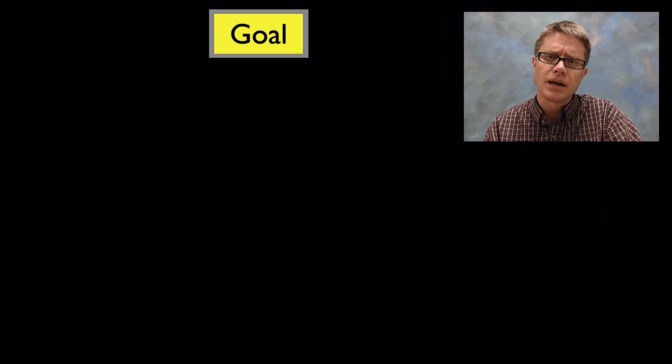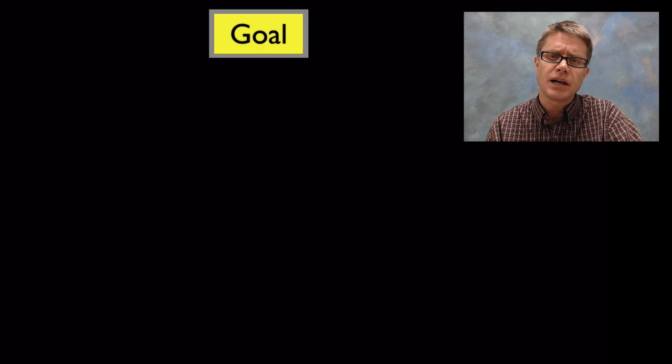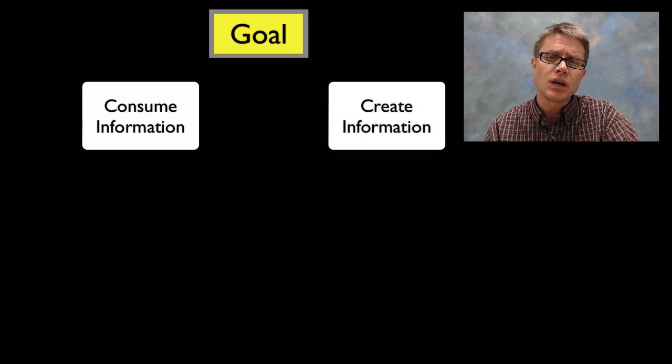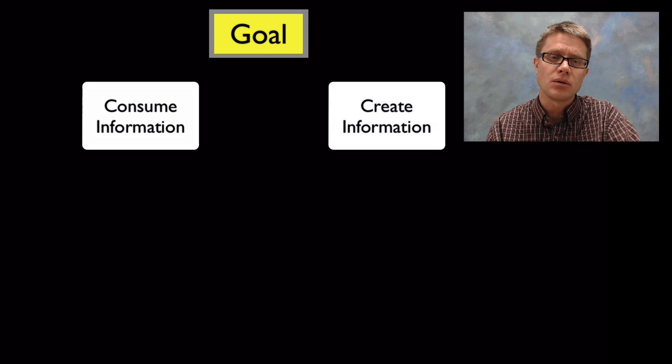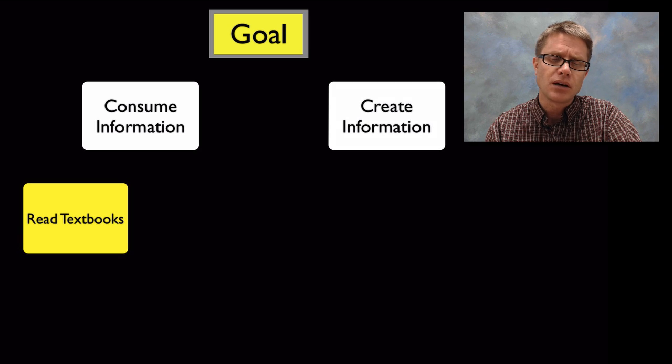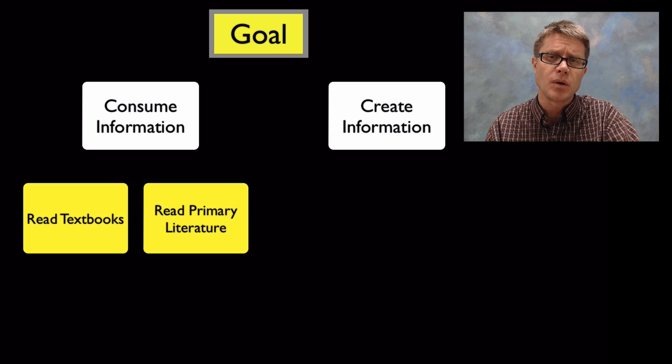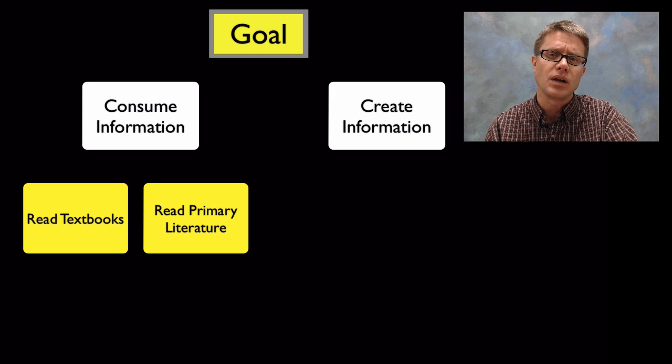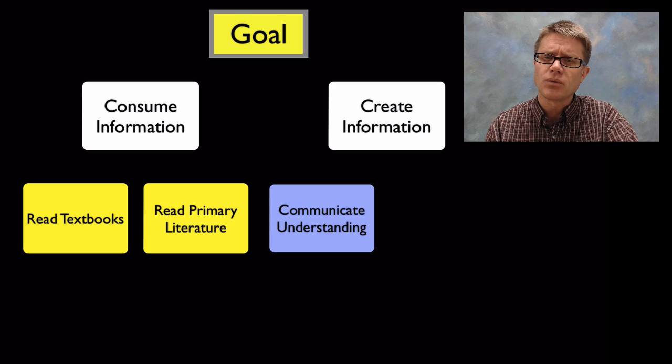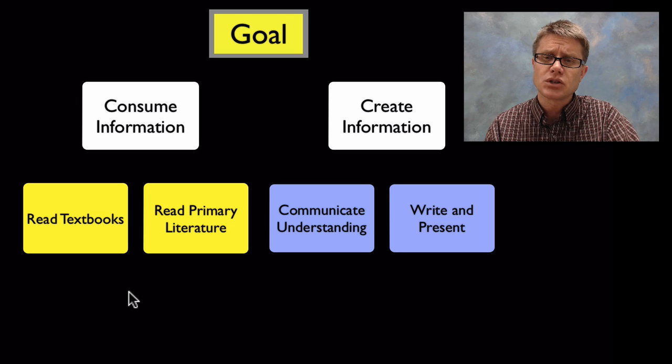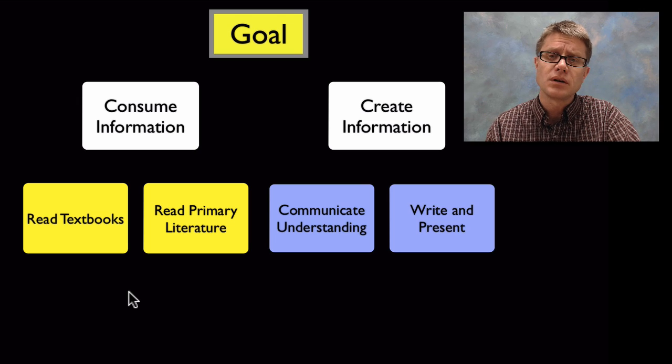So what's the goal then as a science teacher? What should be the goal in a science classroom? We want our students to be able to consume information and then be able to create and share information of their own. If we break that down in more detail, we want them to be able to read books, read text, and also read primary literature. Primary literature is literature that's created by scientists and engineers, those journal articles for example. We also want them to create information, communicate their understandings, and then finally share that in writing or in presentation.